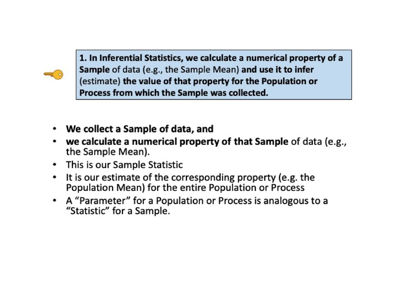But most often, we don't have all the data from the entire universe under consideration — that is, from the population or process. It is impractical or impossible to collect data from all the residents of an entire country. And for an ongoing manufacturing process, new data are constantly being created, so whatever we gather will be incomplete soon afterward. So we collect a sample of data, then we calculate a statistical property for that sample — for example, the mean or the standard deviation.